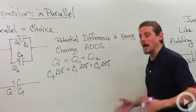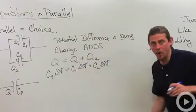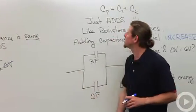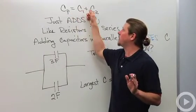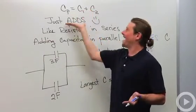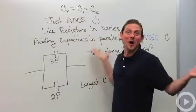And that gives us a wonderfully simple formula for adding capacitors in parallel. C parallel just equals C1 plus C2. So that means all I have to do is just add, which is always nice.